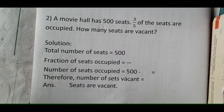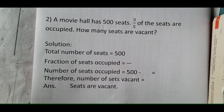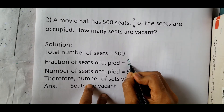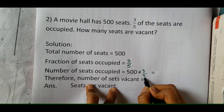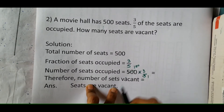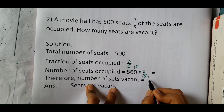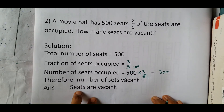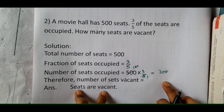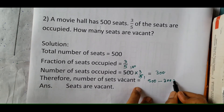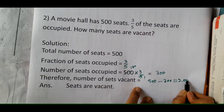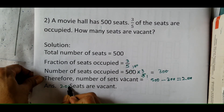Let us solve one more problem. A movie hall has 500 seats. 3 upon 5 of the seats are occupied. How many seats are vacant? Total seats are 500. Fraction of seats occupied is 3 upon 5. Number of seats occupied is 500 into 3 upon 5 — cancel 5 and 500: 5 ones are 5 and 5 hundreds are 500 — giving 100 into 3, which equals 300. Therefore, number of seats vacant is 500 minus 300, which equals 200. So 200 seats are vacant.